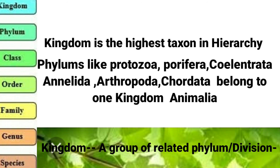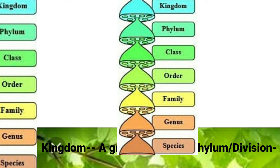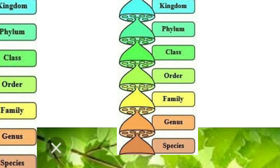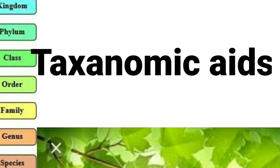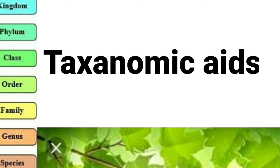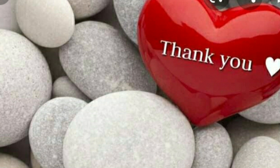That is how taxonomic categories are studied. The taxonomic hierarchy goes from species at the bottom to kingdom at the top, with kingdom being the highest taxon. I hope you have understood, and in the next video we shall learn about what are taxonomic aids. Thank you.